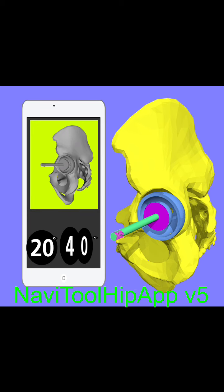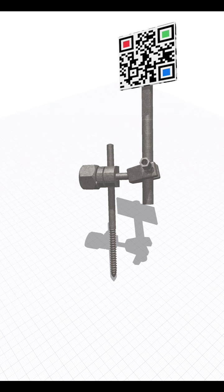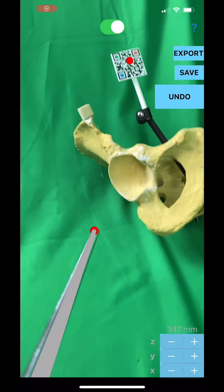The app starts after recognizing the QR code image attached over the passive sensor. A built-in dedicated QR code image should be exported from the app and printed on a common color printer, preferably as an adhesive label, and attached firmly to the passive sensor's dedicated surface plane.